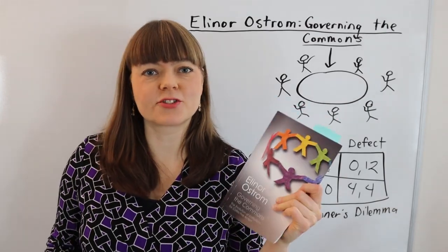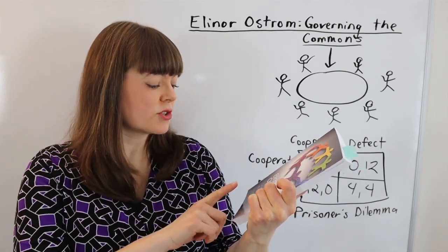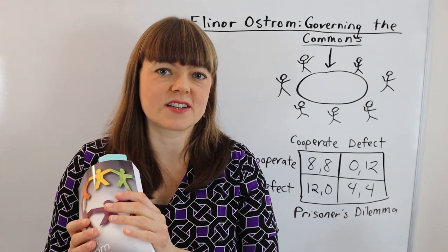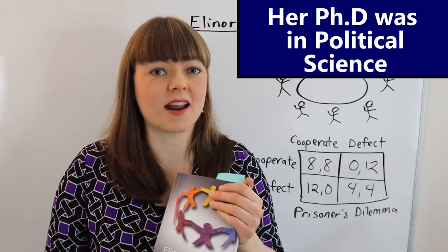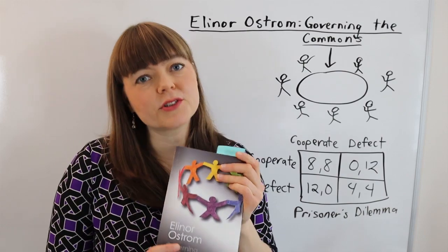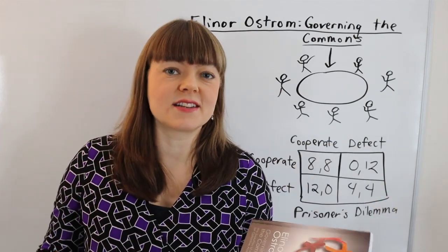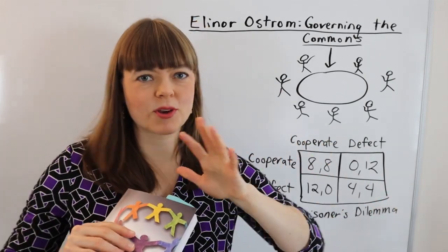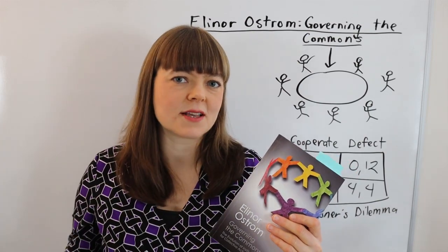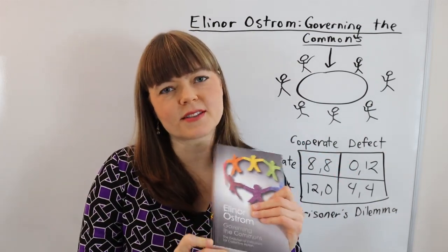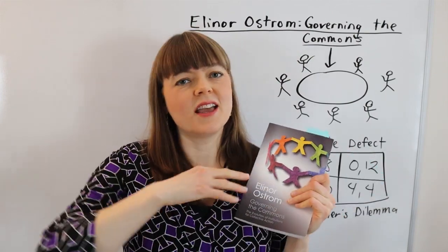I'm doing a series on Elinor Ostrom's book, Governing the Commons — and the subtitle is also relevant: The Evolution of Institutions for Collective Action. Elinor Ostrom is actually the first ever female economist to win the Nobel Prize in Economics, and this book I think is revolutionary and very important to understanding some of the dilemmas we have going on in society today. In this video, I'm just going to set up what the book is doing and its approach, and then I'll have a series of videos going concept by concept through some of the more important ideas she introduces in later chapters.